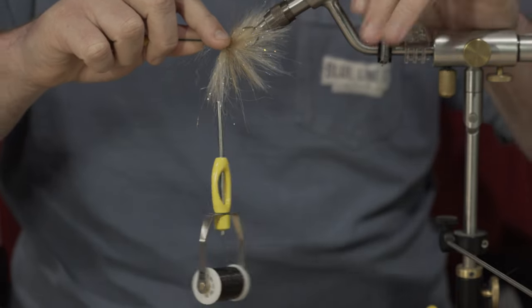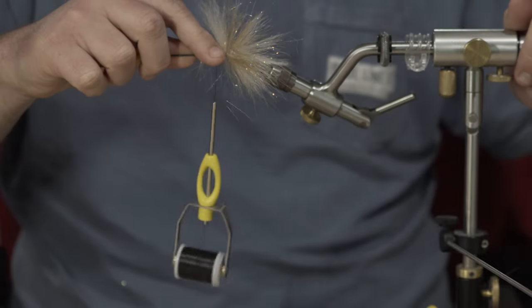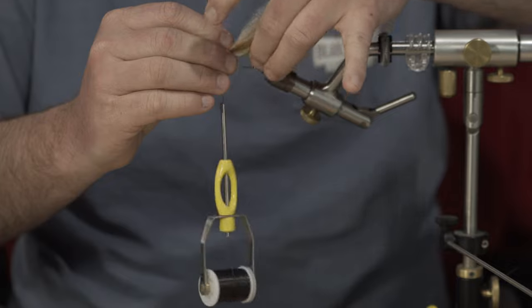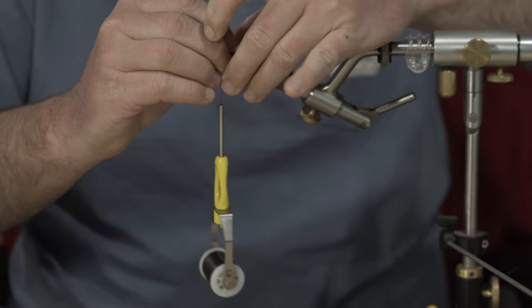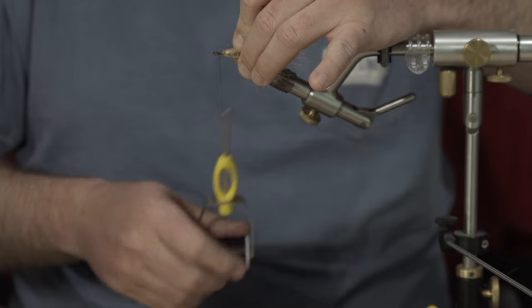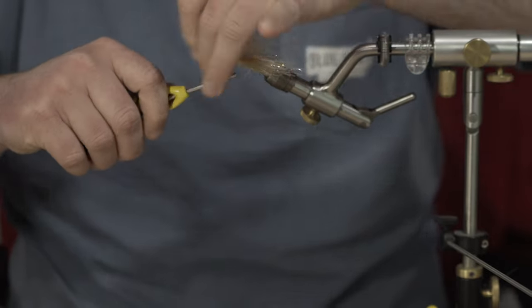A lot of those, as you saw, as I was wrapping, were getting trapped kind of in there. So we're just going to easily kind of pull these fibers out. My thread nice and tight, and then wrap down on top of it.